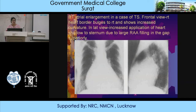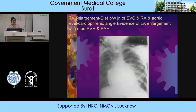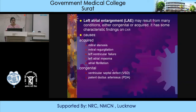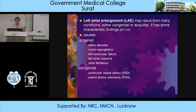Left atrial enlargement may result from many conditions, either congenital or acquired. Acquired causes: mitral stenosis, MR, LVF, LAM, atrial fibrillation. Congenital causes: VSD or PDA. On the plain radiograph, as the left atrium enlarges, it becomes directly visible or displaces adjacent structures.